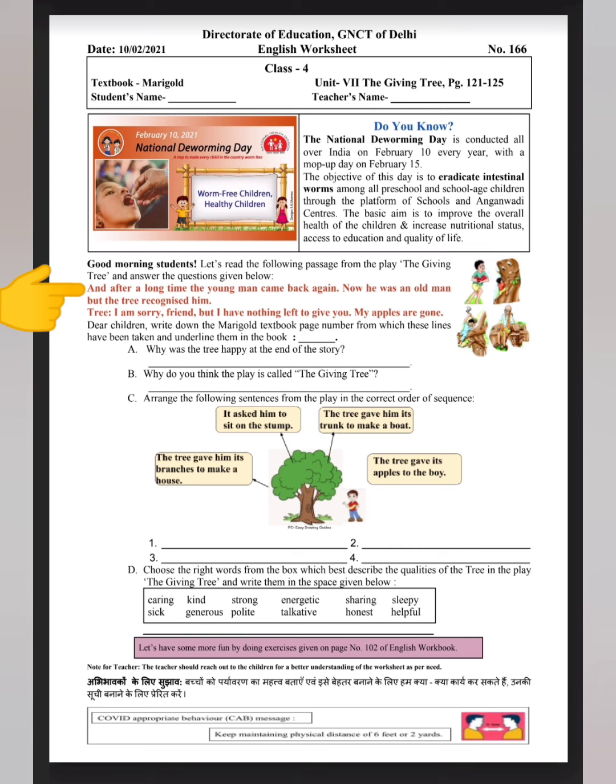Tree said, dear children, write down the Marigold textbook page number from which these lines have been taken and underline them in the book. You have to write the page number here and you have to underline the lines from the book on the page.